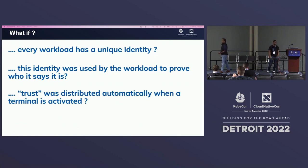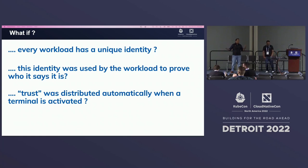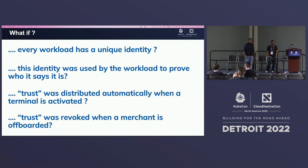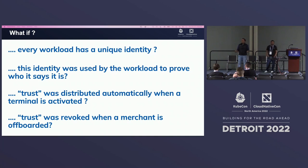What if this identity was used by the workload to say who it is? And what if trust was automatically distributed when a terminal is activated? There should be some sort of trust model where services on the back end know exactly what the terminals are and how they work. How do you figure out a way to revoke that trust when a merchant is off-boarded? These are essentially the 'what if' challenges we started to look at — providing an identity for every workload and ensuring each workload can talk to others in a seamless, mutually authenticated way.